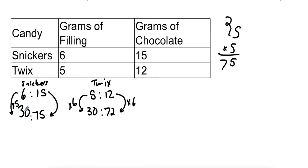So while these both have the same amount of filling, I can see that Snickers has a little bit more chocolate than Twix does. So I'm actually going to say that Twix has more of its candy bar made of filling, because again, they have the same amount of filling, but Twix uses a little bit less chocolate in this example.